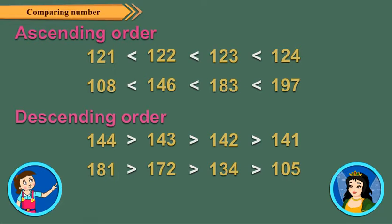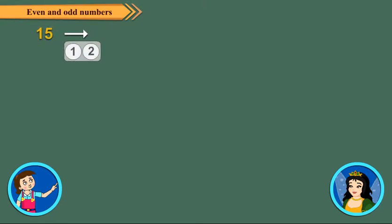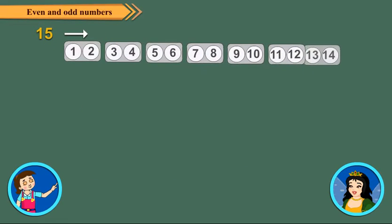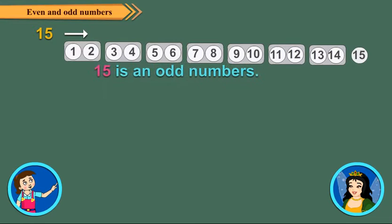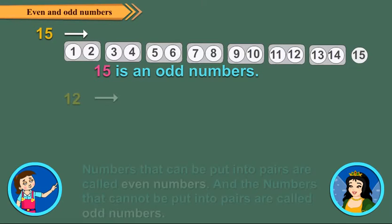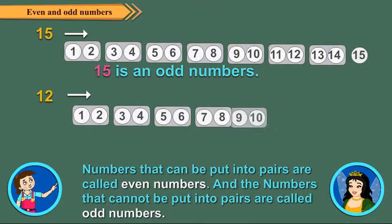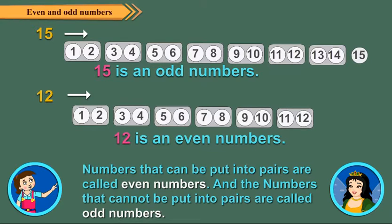Tina, our teacher also told us about even and odd numbers. Okay, then tell me, 15 is an even number or an odd number? 15 is an odd number. Numbers that can be put into pairs are called even numbers and the numbers that cannot be put into pairs are called odd numbers.